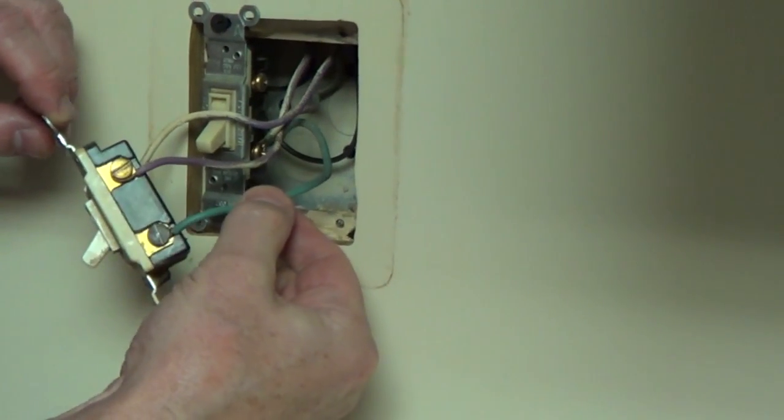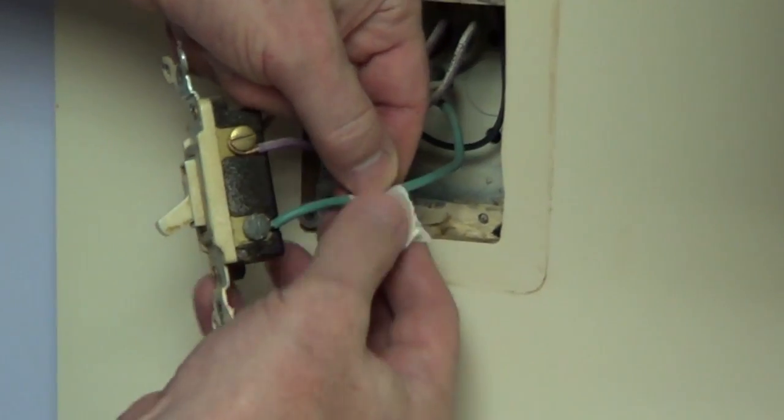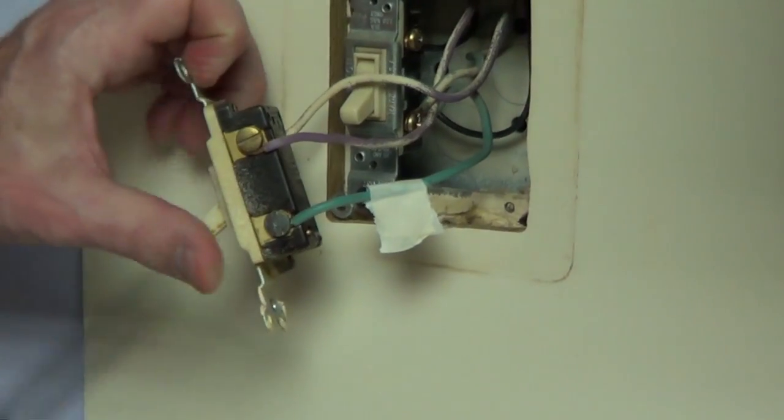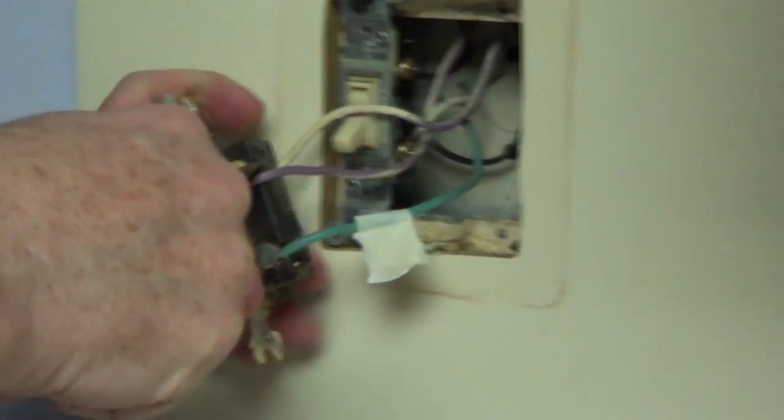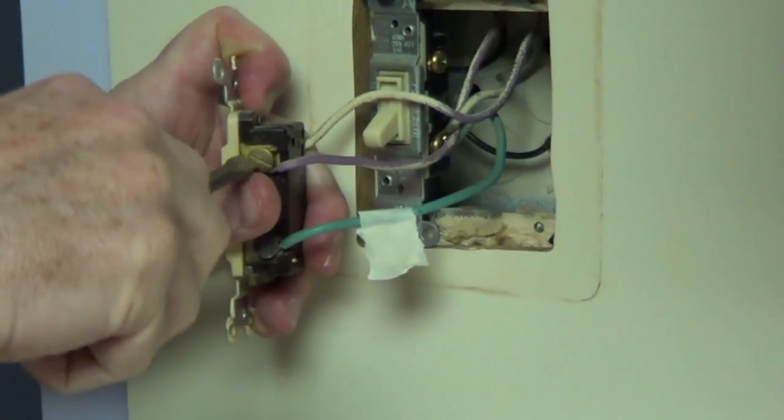I'm going to take a little piece of masking tape and we'll mark this wire. Now that I've marked the common wire, I'm just going to unscrew the wires from the old switch, and then we'll connect the new switch.